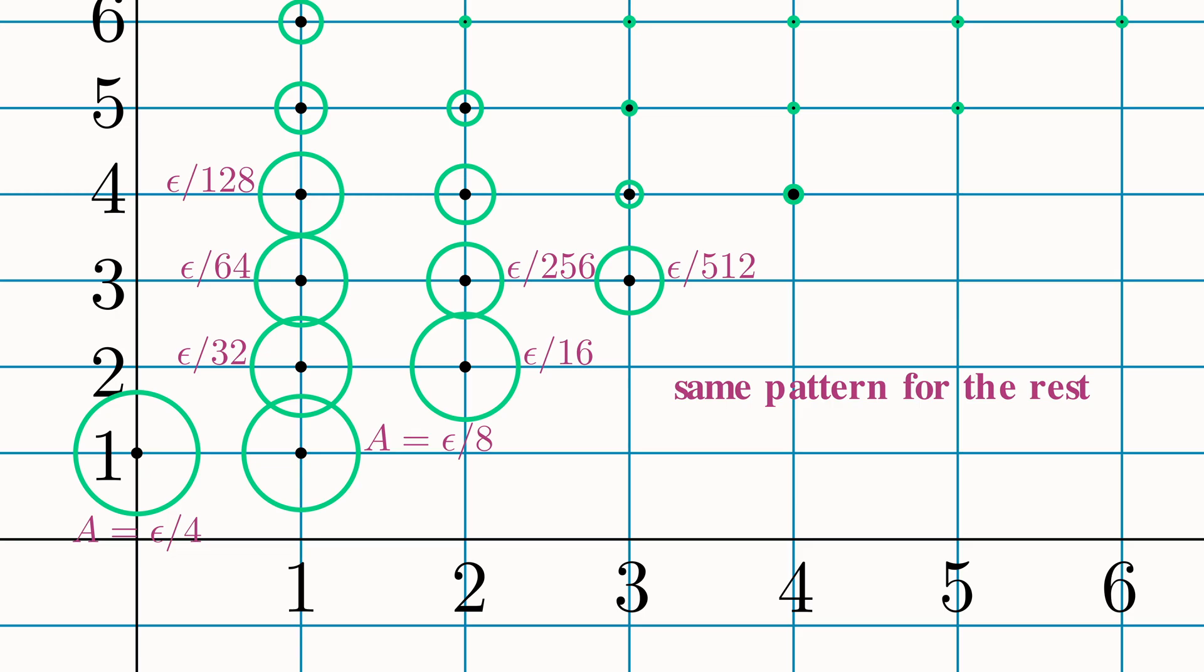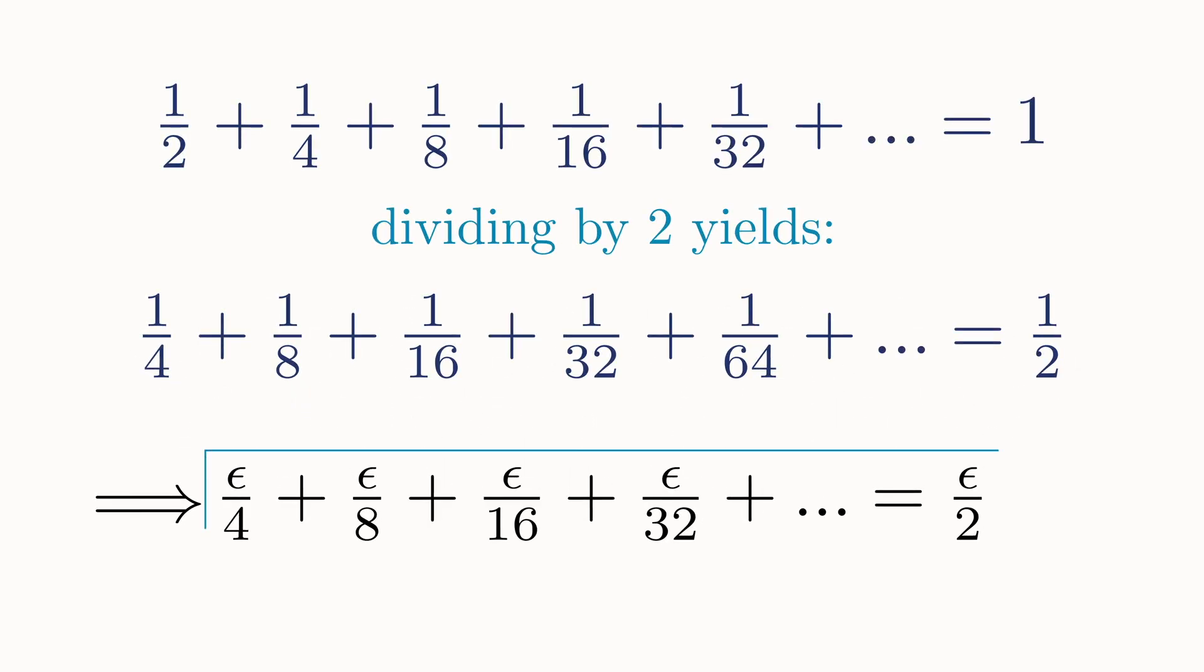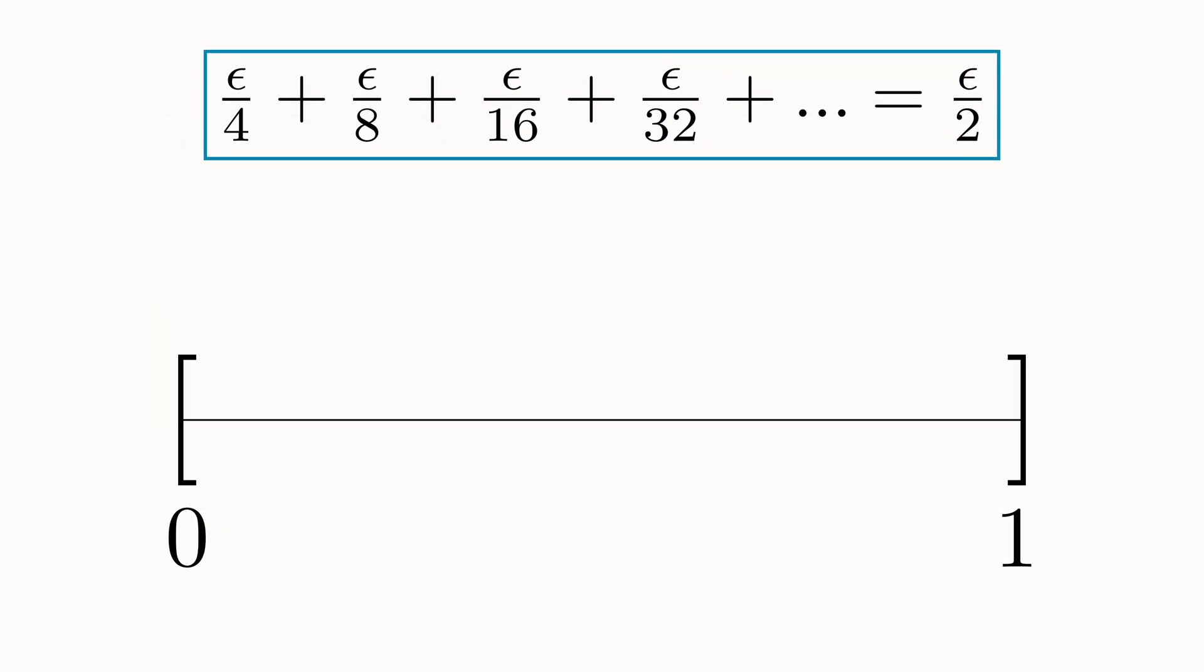So we've managed to cover all the rational points with these small circles of varying areas. And here's the trick. The values of all these areas form an infinite geometric series. So we can sum them all up, and the entire sum converges to epsilon over 2. Therefore, the summed area, or measure of this entire sequence, is epsilon over 2. This entire argument can be projected onto the real line where we use intervals instead of circles. We still arrive at the same conclusion.